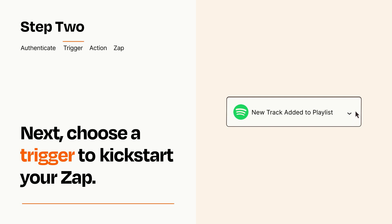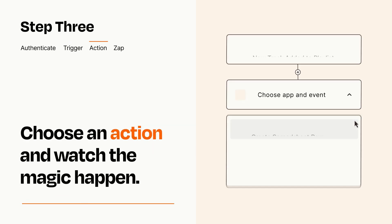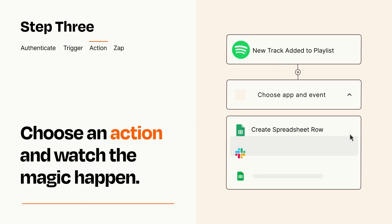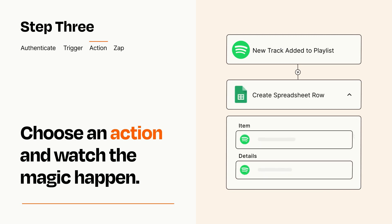This last part is where the magic happens. Choose the action you want to happen in your target app. You'll see a bunch of fields where you can specify the details of your Zap. You can type free form text or pull data in from your trigger step as needed.